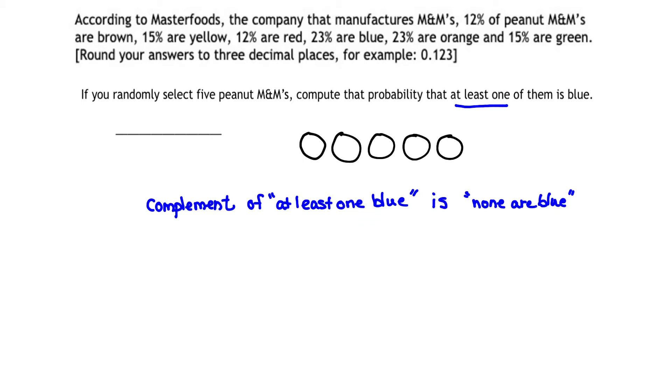Let's put this together by looking at that rule for complements. Namely, the probability that an event occurs is equal to one minus the probability that the event does not occur. For our purpose, we can say that the probability that at least one M&M is blue is equal to one minus the probability that none of those five M&Ms are blue.